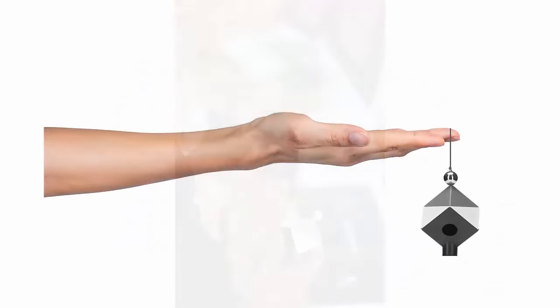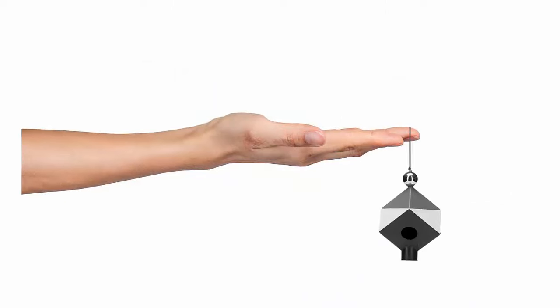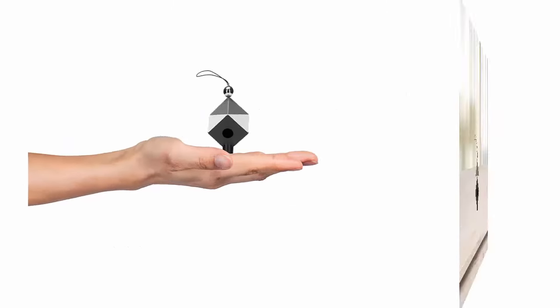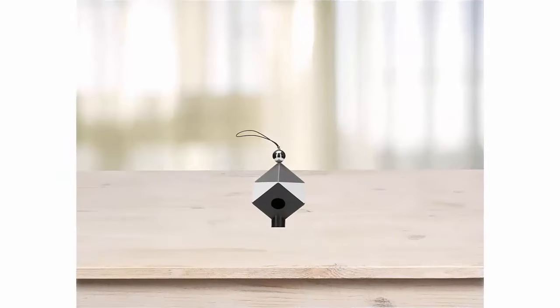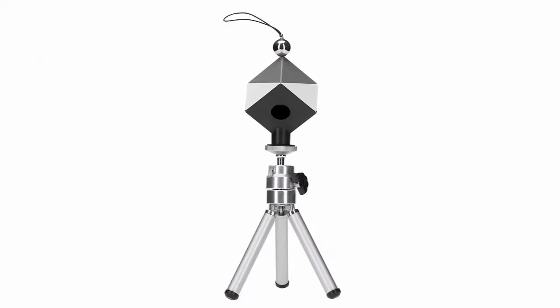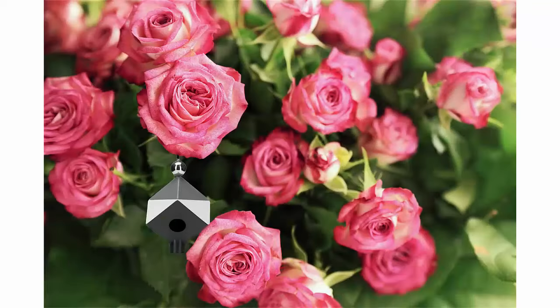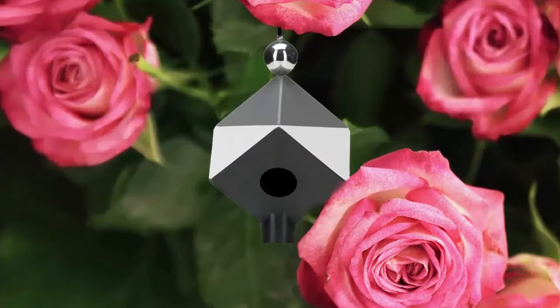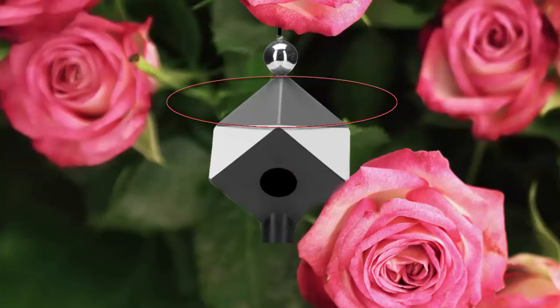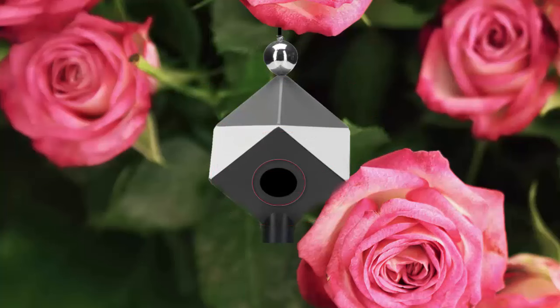To setup the Spyder Cube, either hang it by the attached loop, have someone hold it, place it on a flat surface, or mount it on a tripod. Take a photo in your lighting environment, making sure that the chrome ball, two white faces, two grey faces, black face, and black trap are visible.